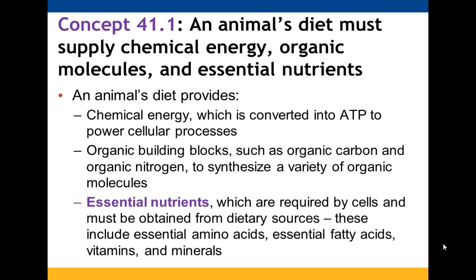We need to make sure an animal's diet has everything they need to survive. It needs to provide energy, which can be converted to ATP. It needs to have all the building blocks to build all the different macromolecules. And it needs to have different nutrients which help to provide enzymes or assist in chemical reactions. These include essential amino acids, essential fatty acids, vitamins, and minerals.